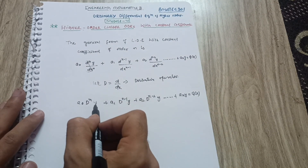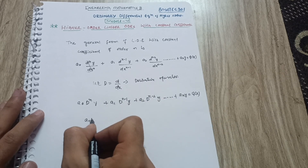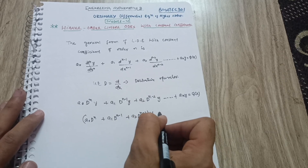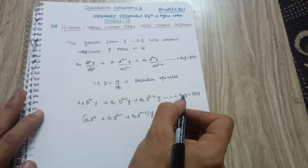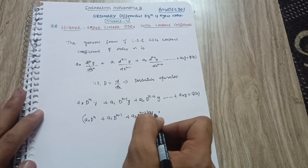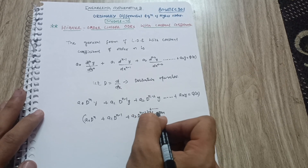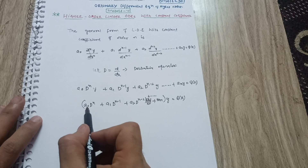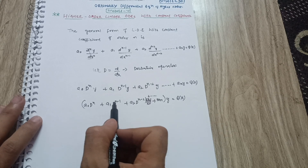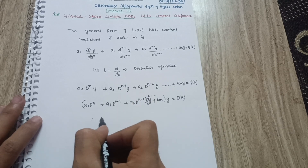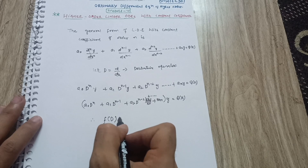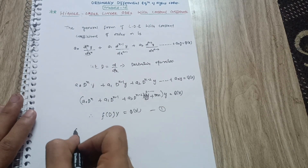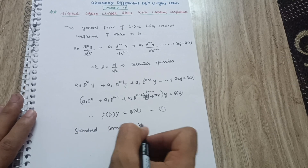I can take y common from all the terms, so I can write: (a₀·Dⁿ + a₁·Dⁿ⁻¹ + a₂·Dⁿ⁻² + ... + aₙ) · y = Q(x). All terms are in the D format — Dⁿ, Dⁿ⁻¹, Dⁿ⁻², and so on. So I can write this as f(D) · y = Q(x), which is the standard form of the higher-order differential equation.